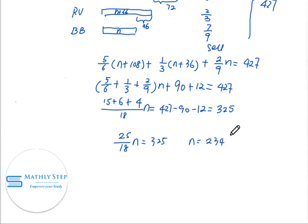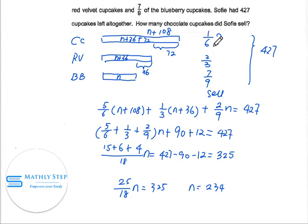So the question is asking here. So we need to find out N plus 108 times one-sixth. N plus 108 times one-sixth equal to 234 plus 108 divided by 6, equal to 57. So this is the chocolate cupcake that Sophie sold in the first place. So it's 57.